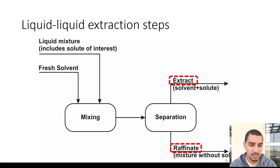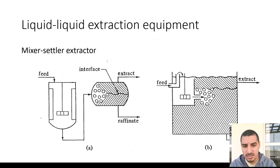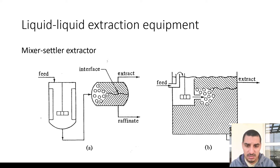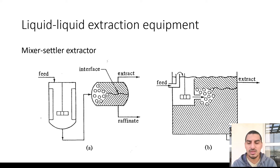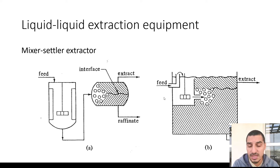The raffinate is the feed mixture after losing some of the solute. This is done in a mixing tank containing an agitator and baffles so that mixing is done efficiently. Once mixing is done it's routed to a decanter, and we get the extract and raffinate from this decanter. In some cases the mixing tank is built into the separation unit as one combined unit. Each of these configurations is considered a single stage, despite having two units.